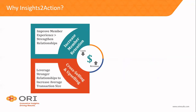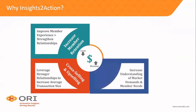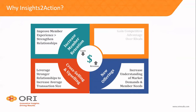Once we really understand member needs and have that better relationship, we want to encourage members to buy new and different things. If they typically only attend the conference, how can we get them involved in educational offerings? A third area is understanding market demands — many CEOs and executive directors tell us they don't truly understand a day in the life of their member, yet need to in order to develop new offerings. Last, systematic listening helps gain competitive advantage to make it hard for competitors to pull your members away.